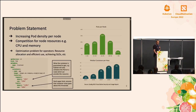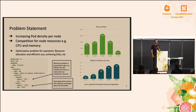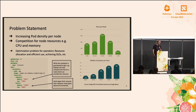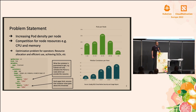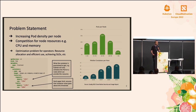Before we look into bandwidth management, I wanted to start with an interesting metric which you can see on the right side. The metric is basically the density — the number of pods per node. The more people use Kubernetes, the higher the density gets. For example, it's probably reasonable to assume in 2022 that there is a median of around 50 pods per node.